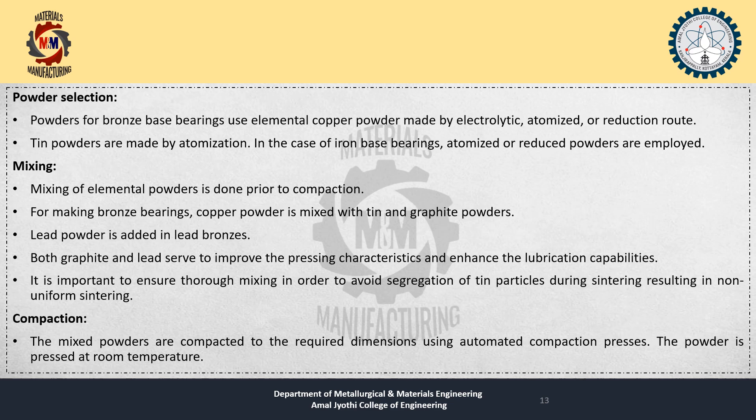Powder selection: Powders for bronze base bearings use elemental copper powder made by electrolytic, atomized, or reduction routes. Tin powders are made by atomization. In the case of iron bearings, atomized or reduced powders are employed.